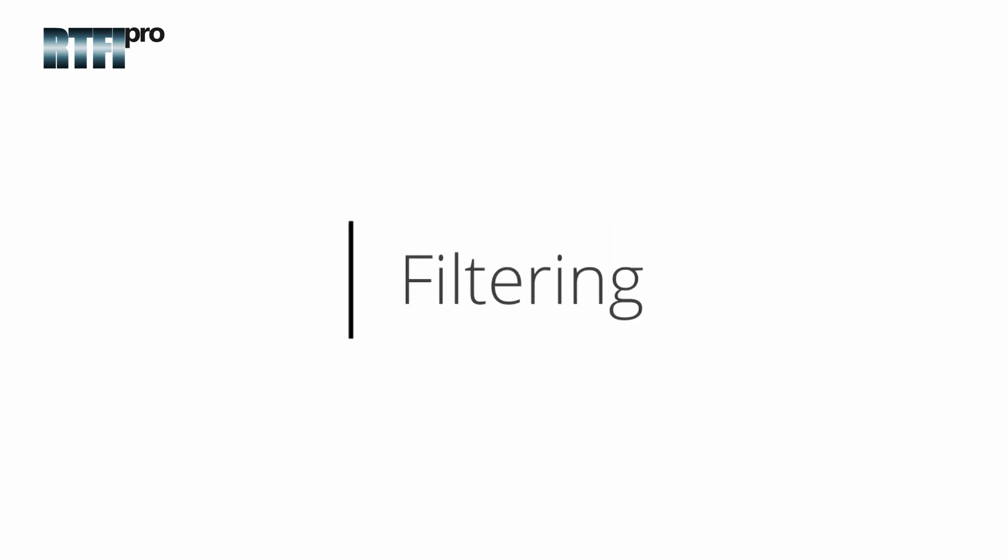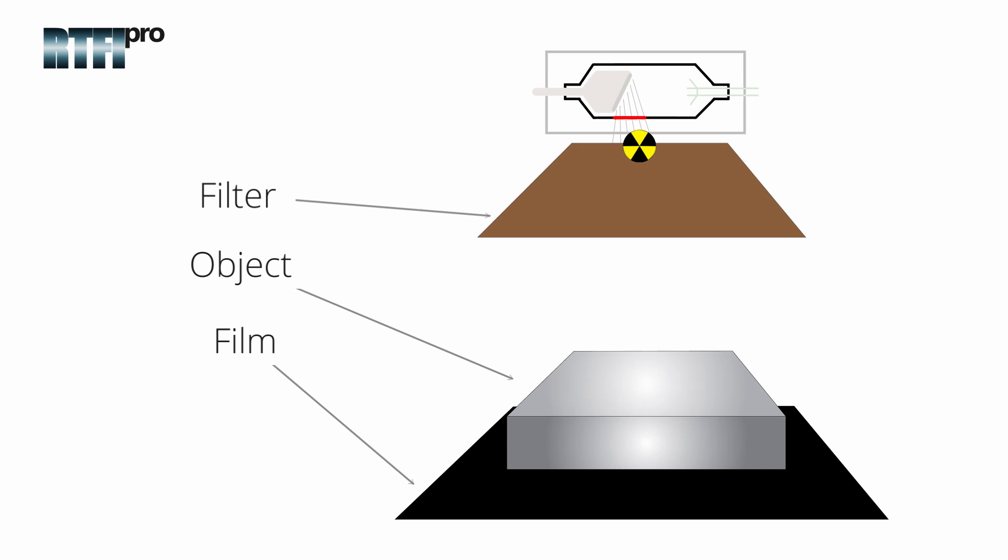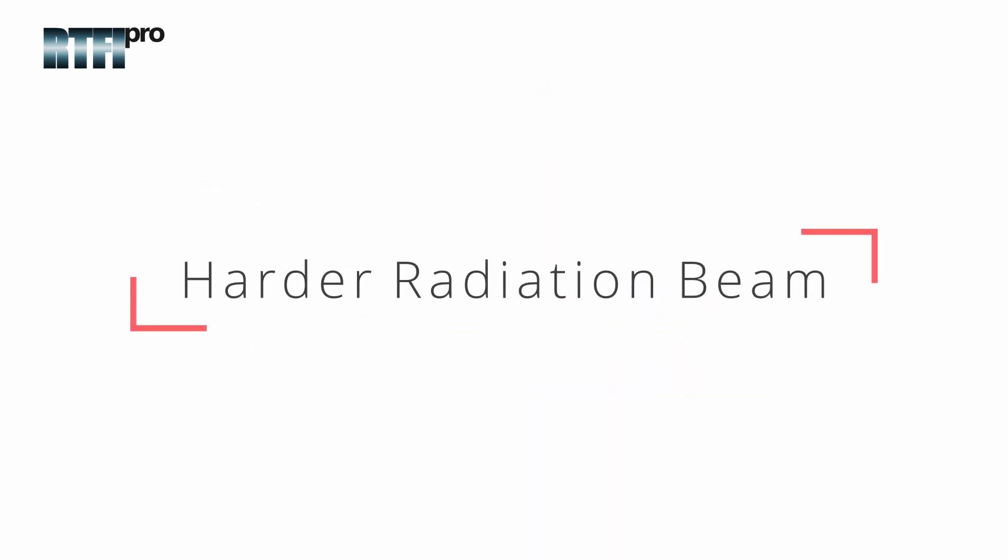Filtering. Filtering is typically the use of copper or lead that is placed near the x-ray tube head between the tube and the object or between the object under examination and the film. When the filter is placed near the tube, its purpose is to filter out the longer wavelengths photons of the primary radiation beam to create a harder primary beam.